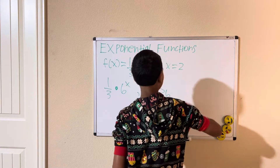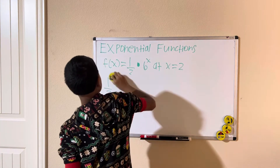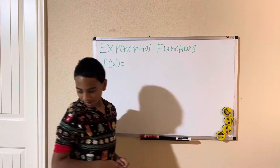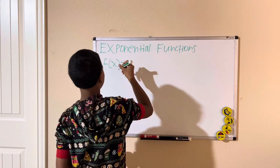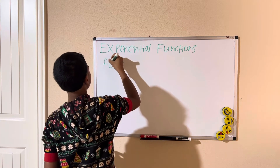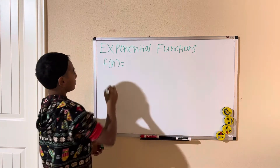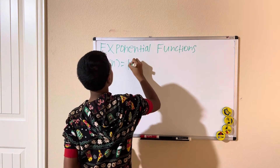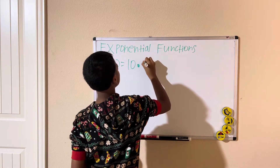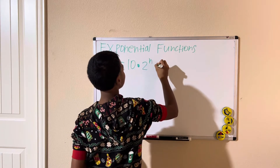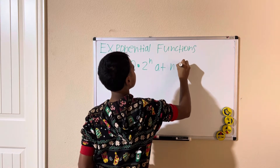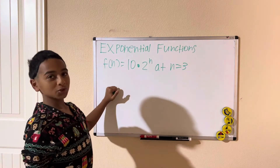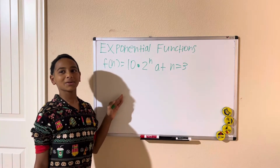Let's do another example. We have f of n equals 10 times 2 to the power of n, at n equals 3. I encourage you to pause the video and try to evaluate this function.